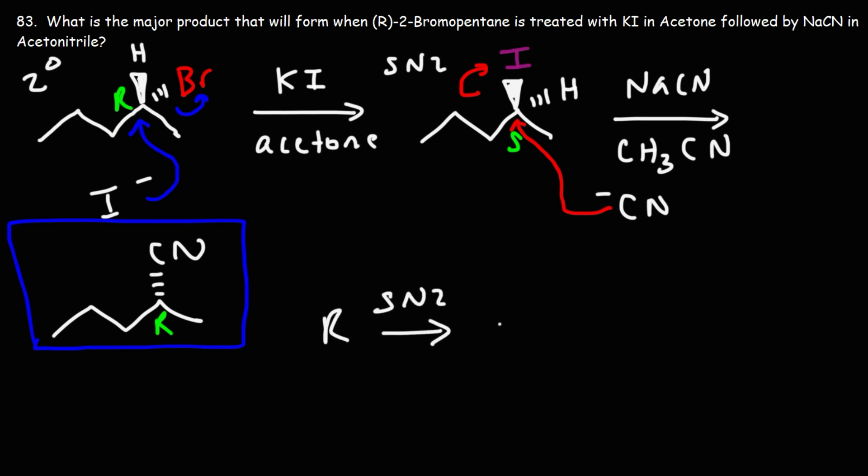As a summary: in the first SN2 reaction we went from R to S, and in the second SN2 reaction we went from S to R. The end result is we retained the original configuration at the chiral center through a double SN2 reaction. That's an example of a double inversion reaction using two sequential SN2 reactions.